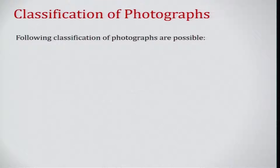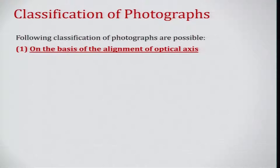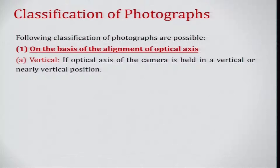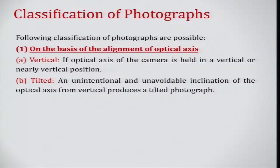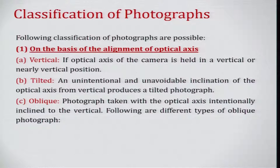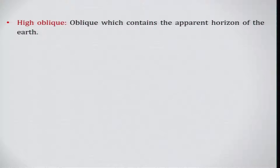Classification of aerial photographs is possible on the basis of the alignment of the optical axis. Vertical: the optical axis of the camera is held in a vertical or near-vertical position with respect to the ground. Tilted: an unintentional or unavoidable tilt of the optical axis from vertical produces a slight tilt in the photographs. Oblique: photographs taken with the optical axis intentionally inclined to the vertical.